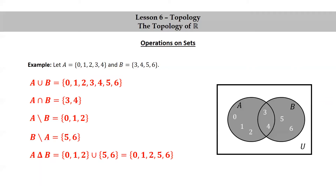Here's a Venn diagram representing this problem. Notice that 0, 1, and 2 are in the part of A that does not include B. 3 and 4 are in the intersection of A and B. And 5 and 6 are in the part of B that does not include A.